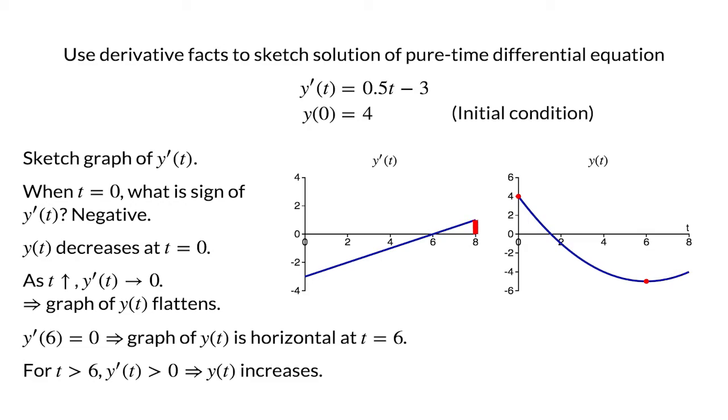As t increases past 6, the derivative becomes positive, which means the graph of y(t) begins to increase, starting off slowly and accelerating.